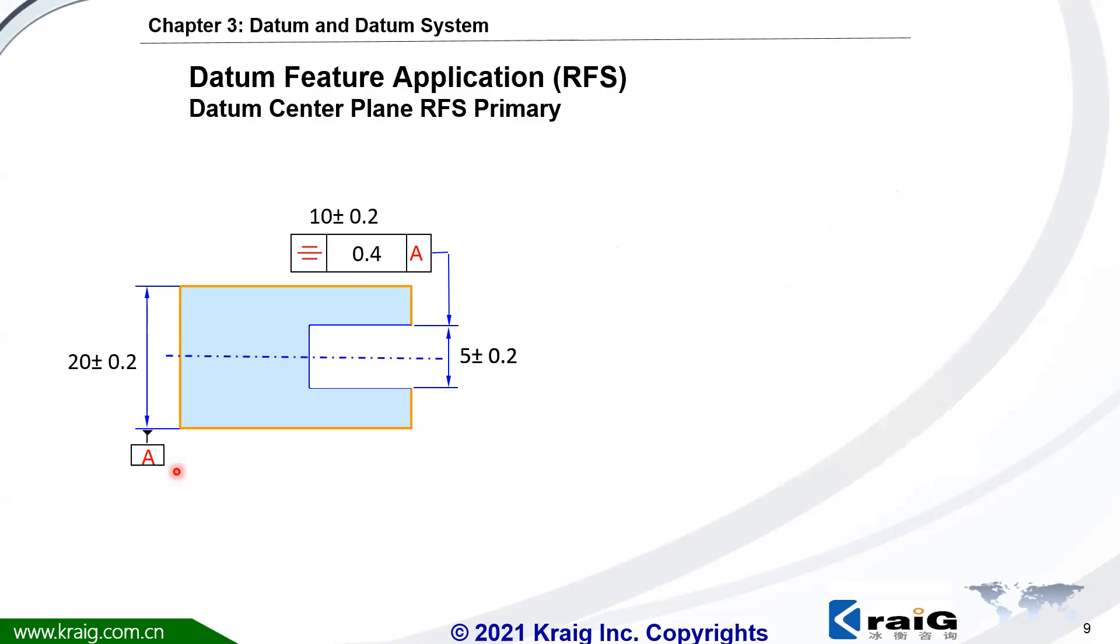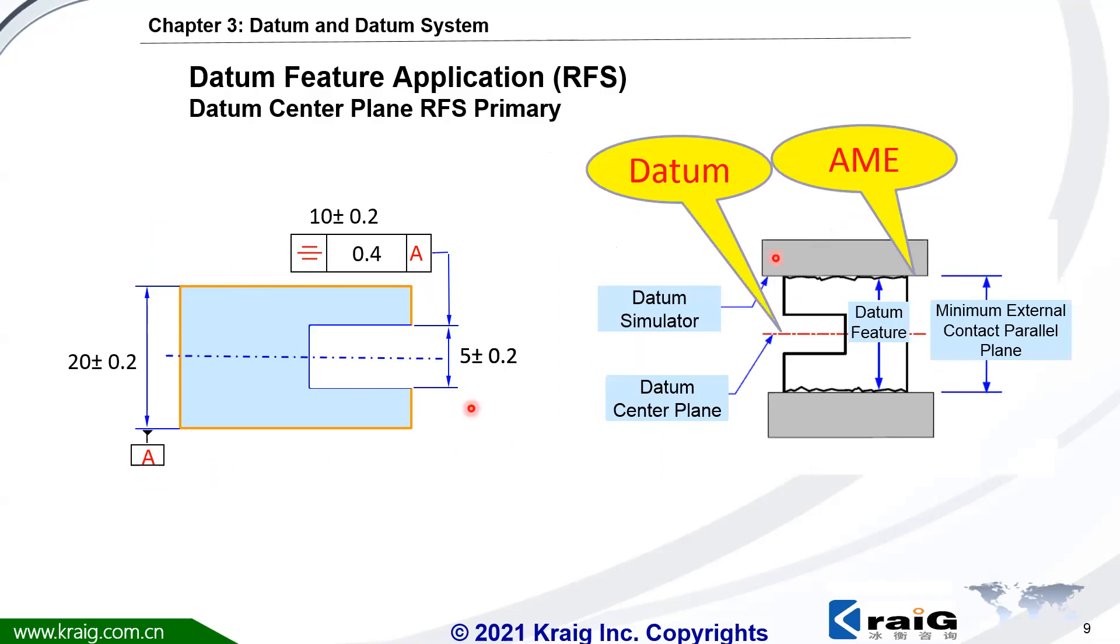If datum A is an external feature of size here, how to find this center plane? Again, AMEE is the outside boundary here. You're going to use AMEE to get the center plane of this datum A.